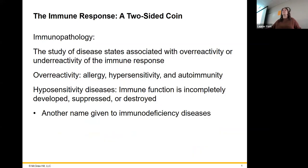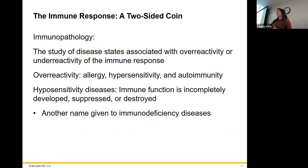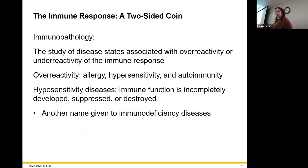Getting into chapter 17, this is going to be dealing with immunopathology — when the immune system goes wrong, when it's not behaving the way we want it to. Immunopathology is the study of disease states associated with overreacting immune responses, and this can lead to allergy, hypersensitivity, and autoimmunity.